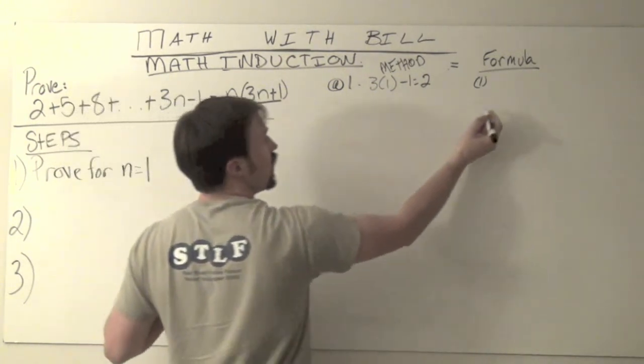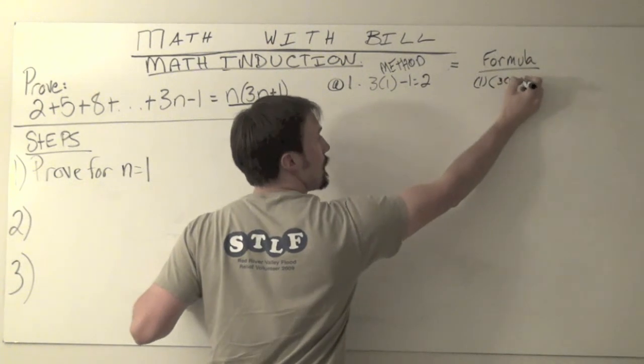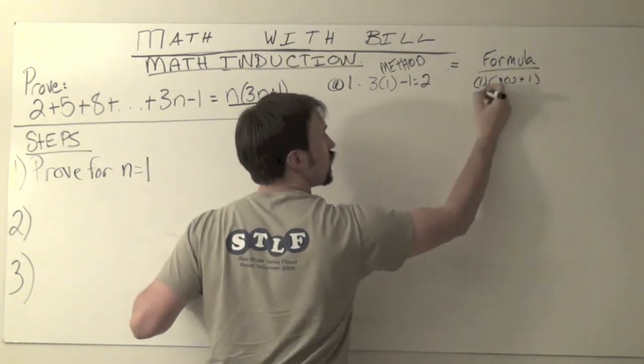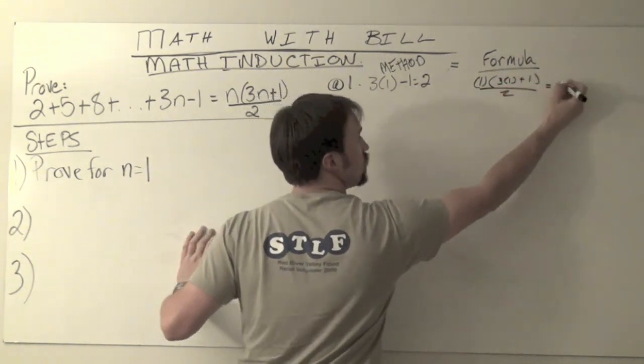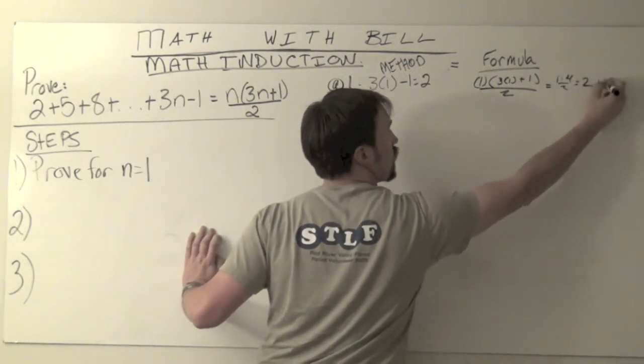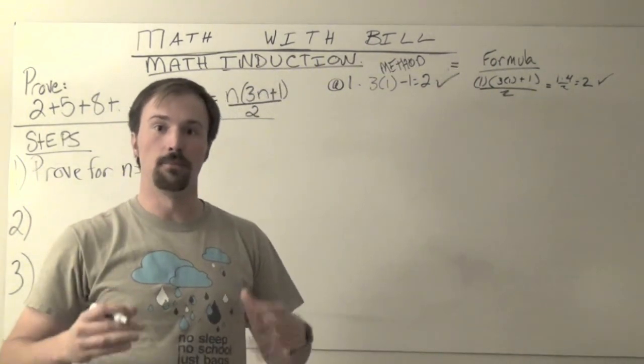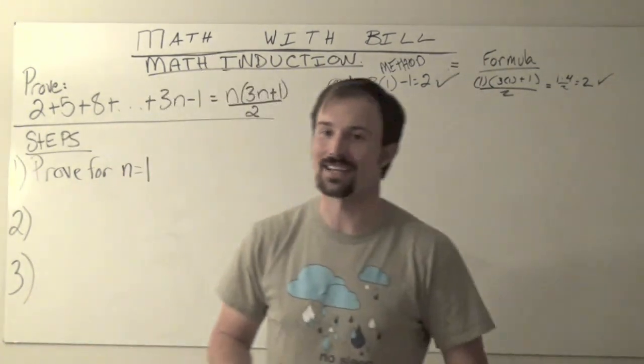So first term again, that's going to be 1 times 3 times my 1 plus 1 more, all divided by 2, which is really 1 times 4 all divided by 2, which is 2. So they match up, that's awesome because that means we can move on to our next step.